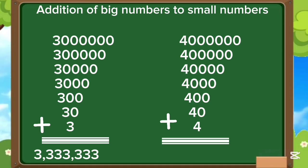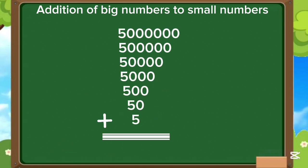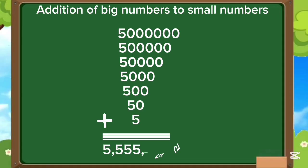4 million plus 400,000 plus 40,000 plus 4,000 plus 400 plus 40 plus 4 is equals to 4,444,444. 5 million plus 500,000 plus 50,000 plus 5,000 plus 500 plus 50 plus 5 is equals to 5,555,555. If you like my video, please subscribe to my channel Learning City.